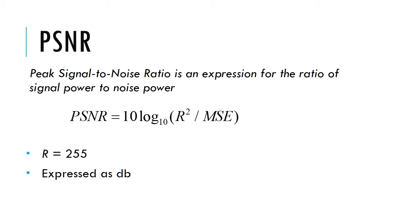In our case, the image is considered as a signal. An 8-bit image has a maximum intensity of 255, and so that is taken as the R value. PSNR is expressed in dB.